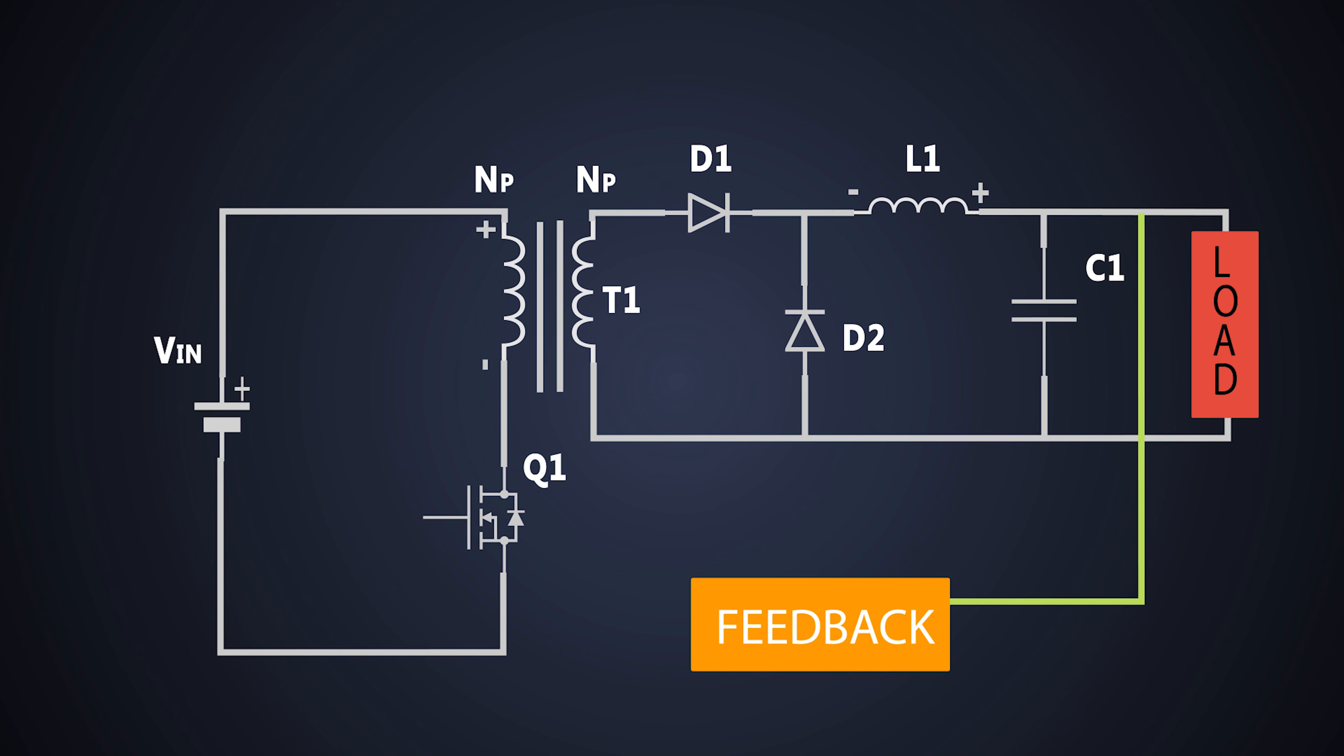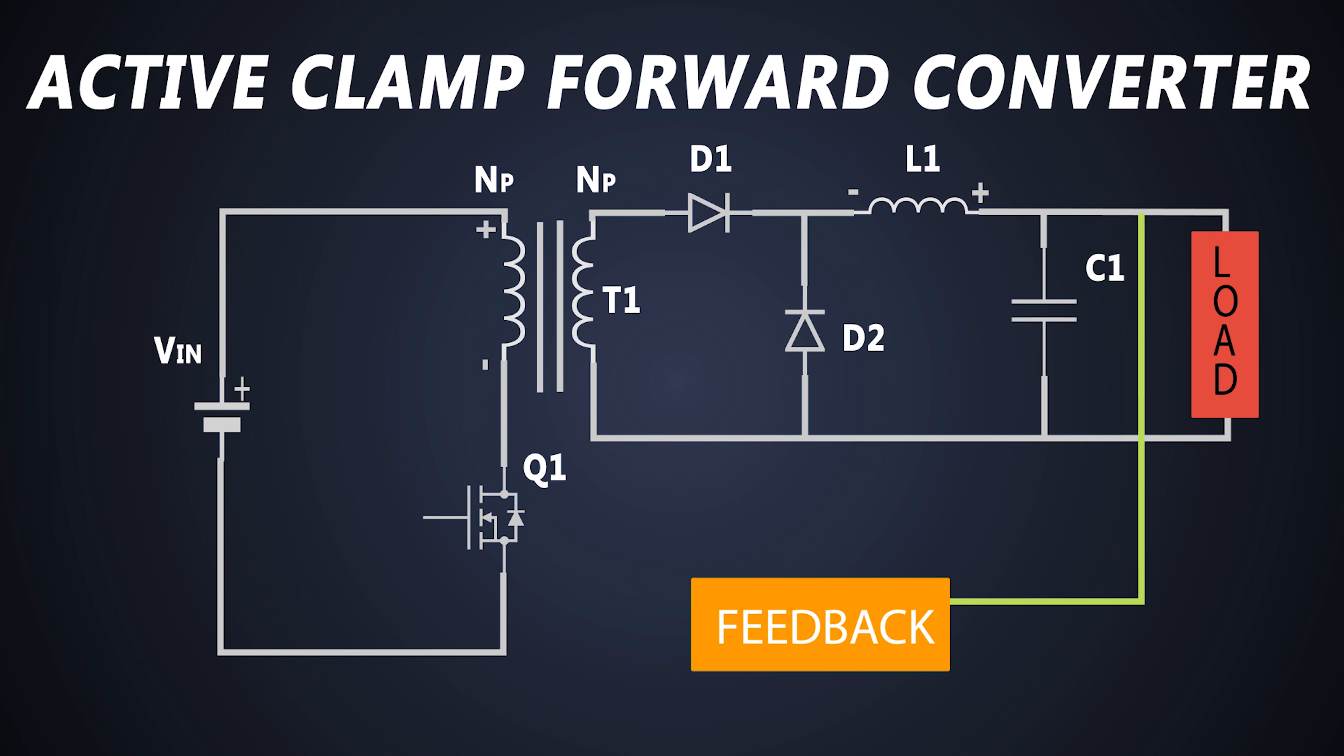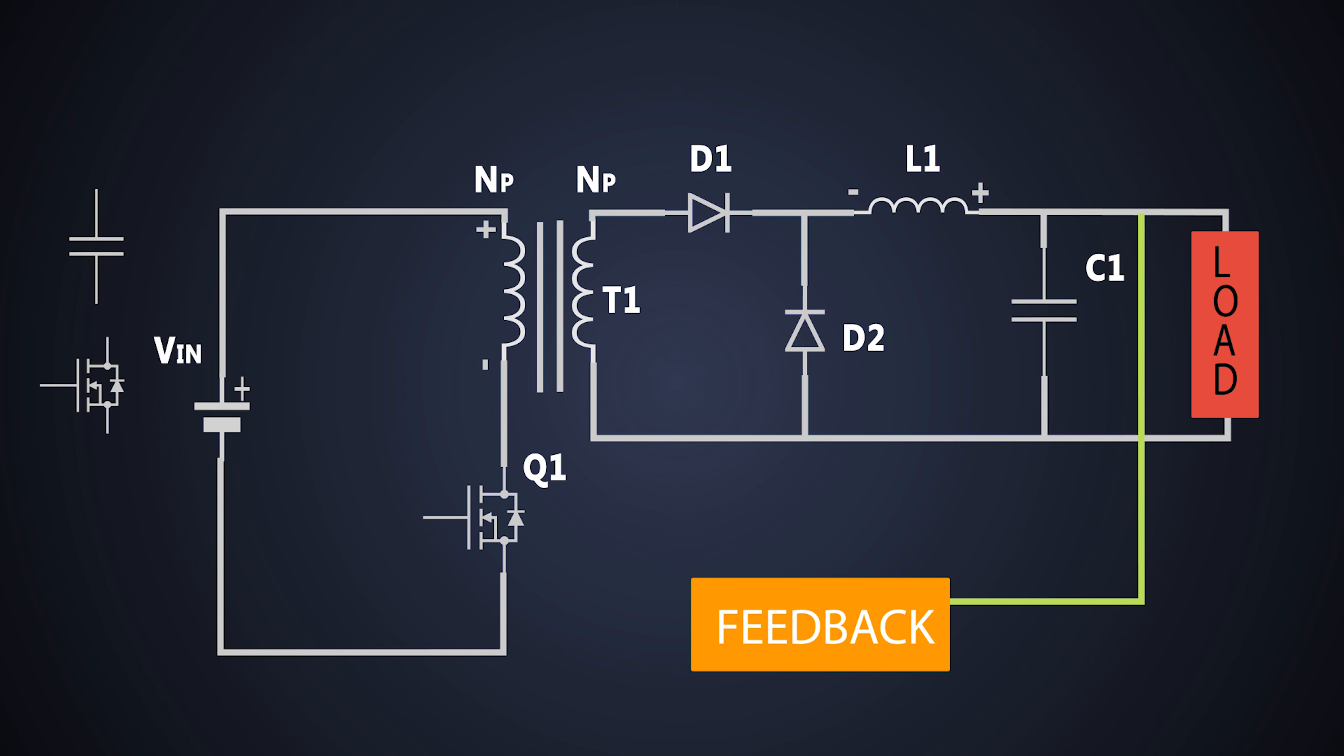The method which does so is known as active clamping method. In this, we have to add a capacitor and a MOSFET. There are two configurations in this circuit. In first, the n-channel MOSFET and a capacitor is used. These are connected across the primary winding of the transformer. And this configuration is known as high side active clamping.